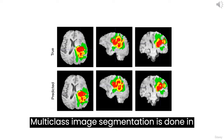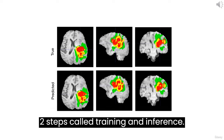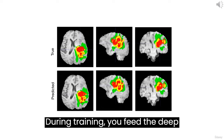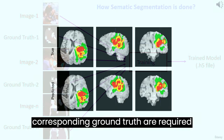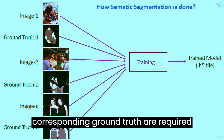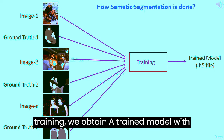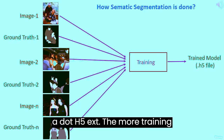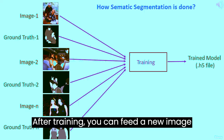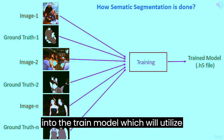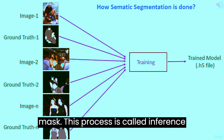Multi-class image segmentation is done in two steps called training and inference. During training, you feed the deep learning architecture with training images and train until it minimizes the validation loss. Many images and corresponding ground truths are required during training. After training, we obtain a trained model with a .h5 extension. The more training images, the higher the training accuracy. After training, you can feed a new image into the trained model, which will predict the segmented mask. This process is called inference or prediction.